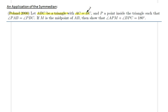P is a point inside that triangle such that angle PAB is equal to angle PBC.